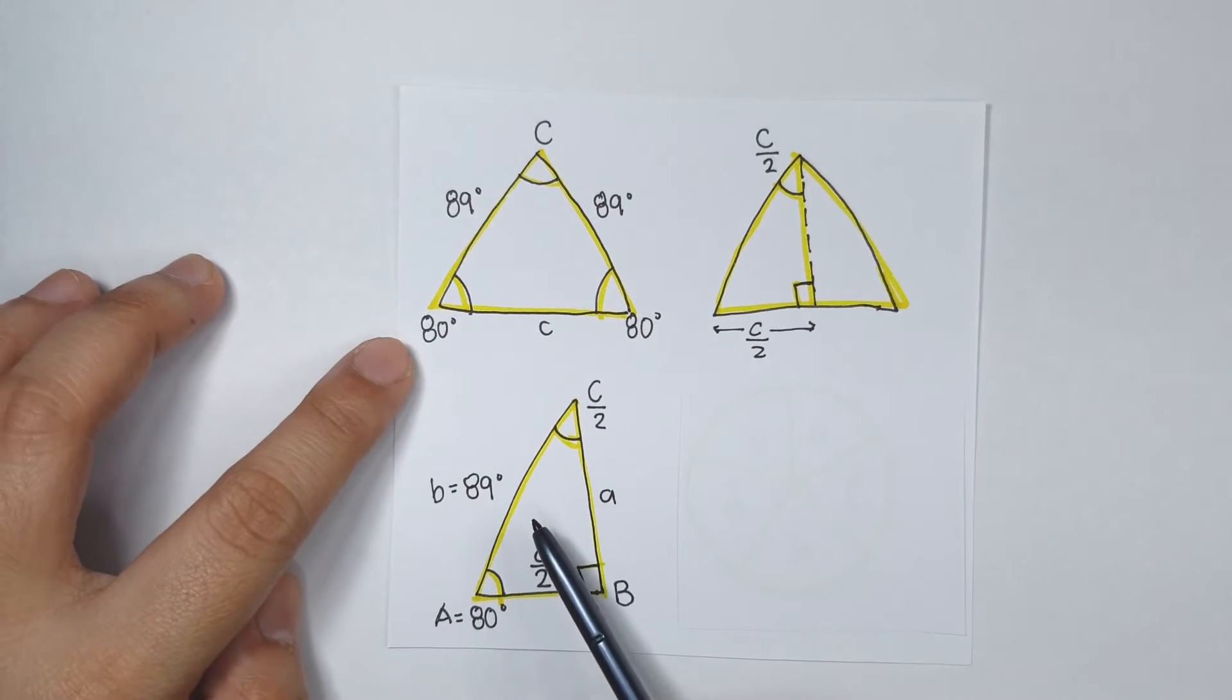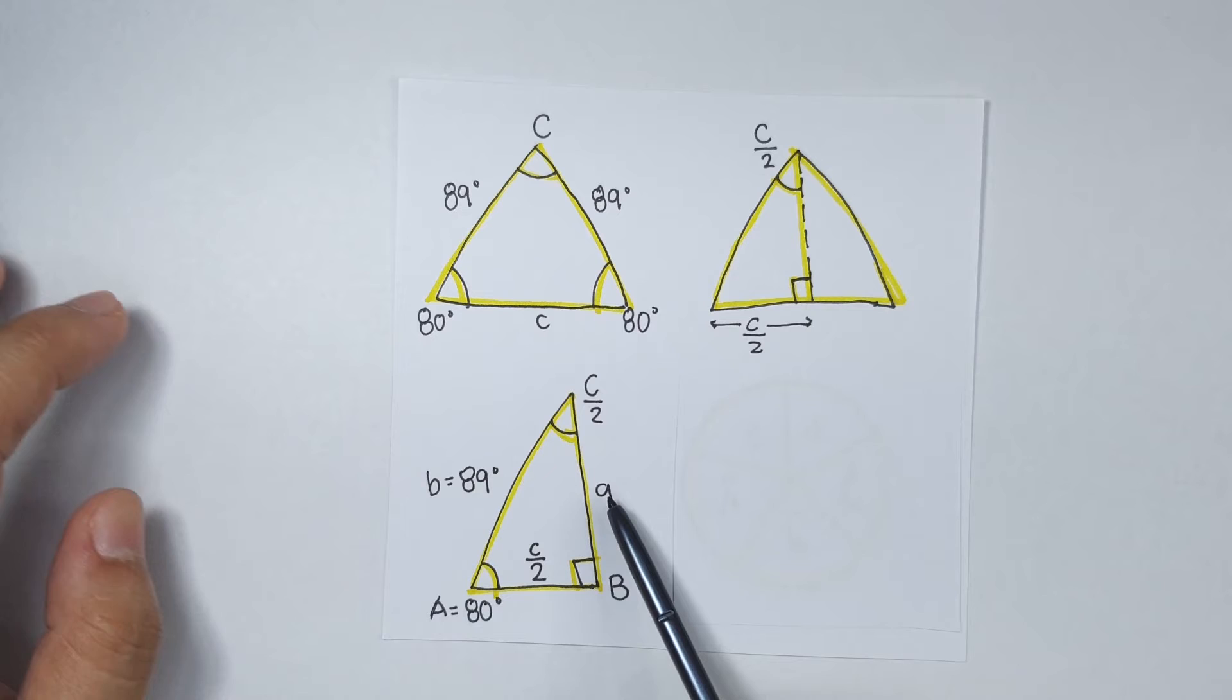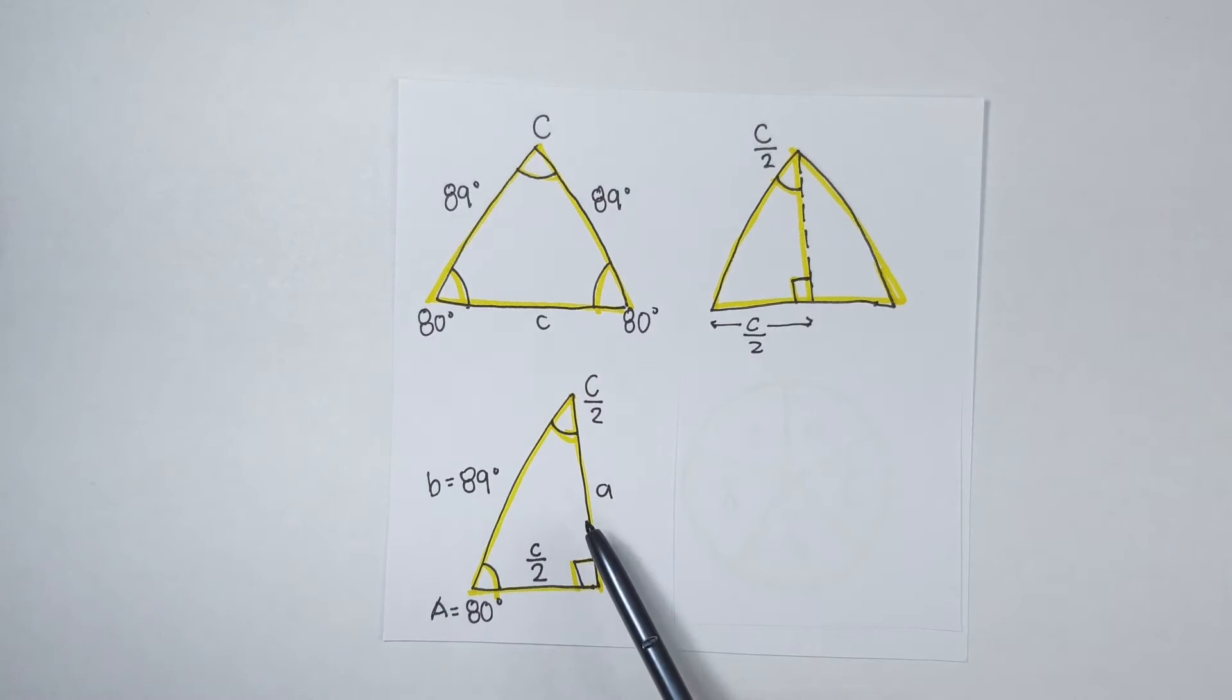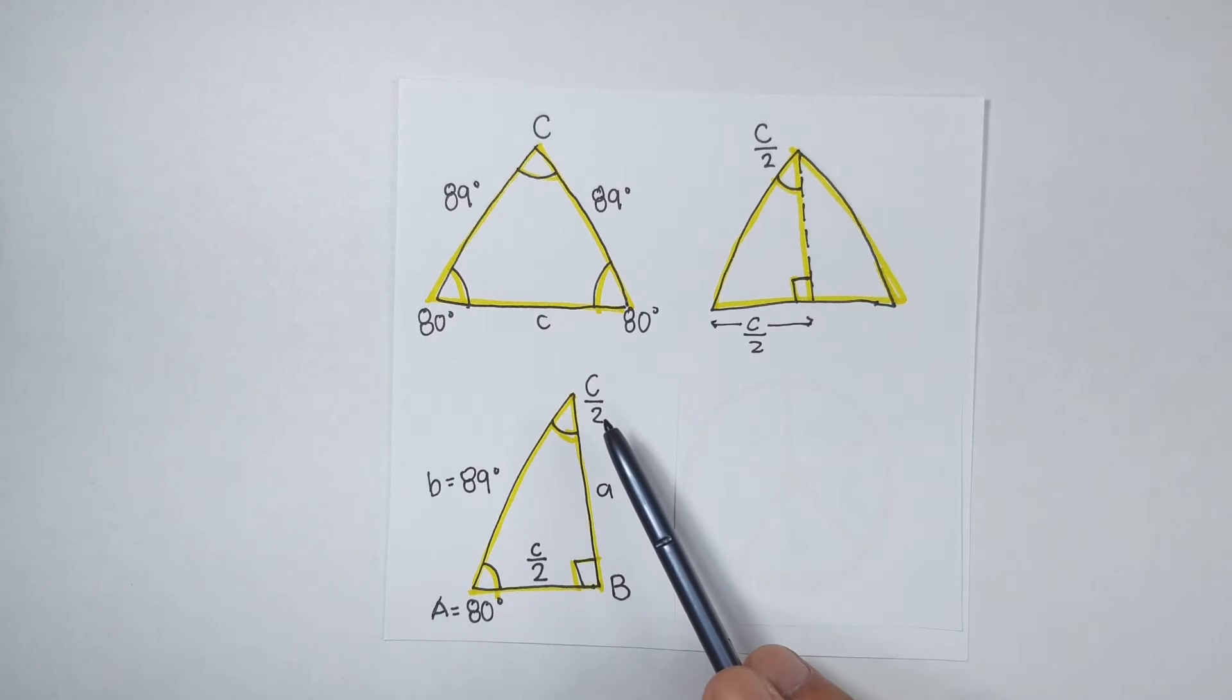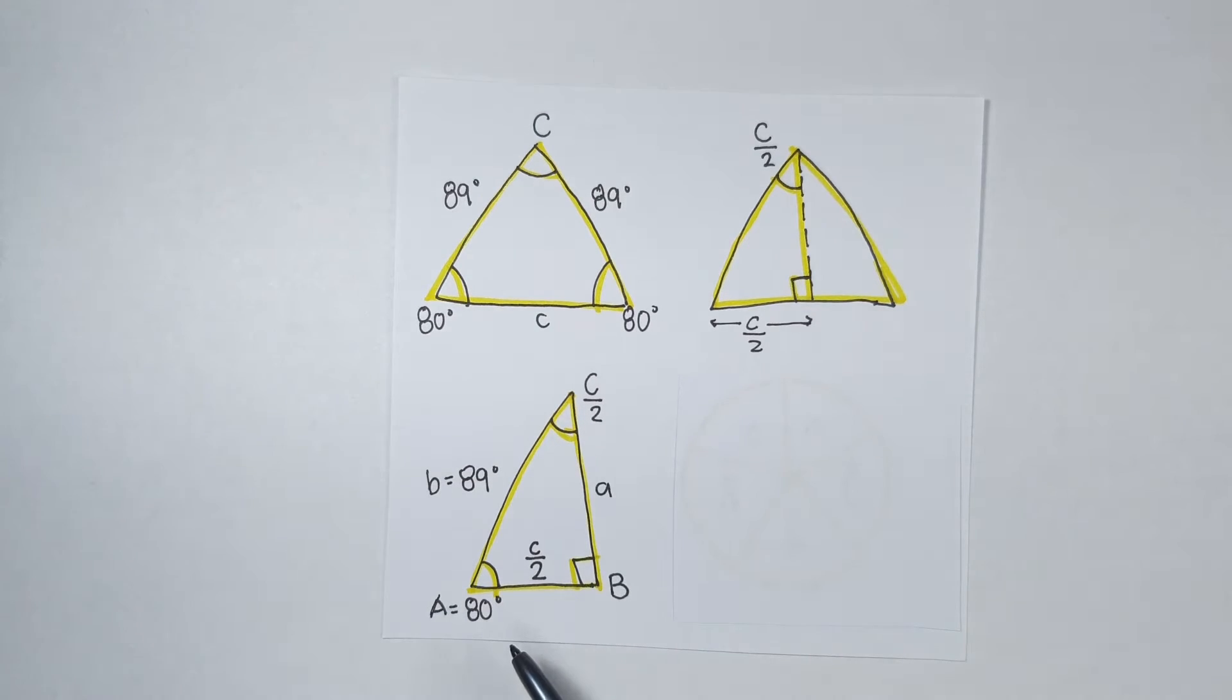So, let's redraw our triangle. This is angle A, so let this be side A. And this is side B, so let this be angle B. And this is angle C and side C. Since we have here a right spherical triangle, we can now use the Napier's rule to solve this problem.